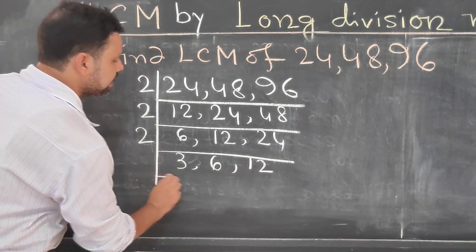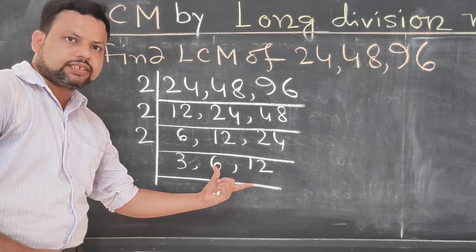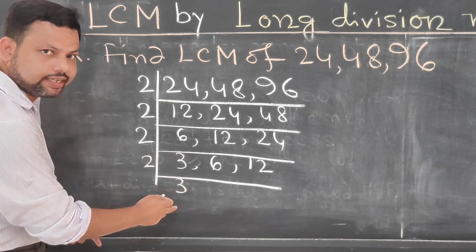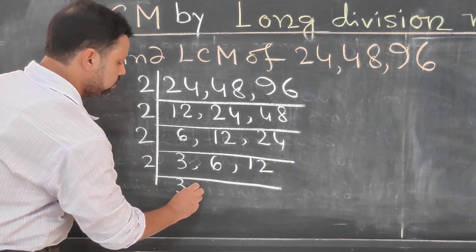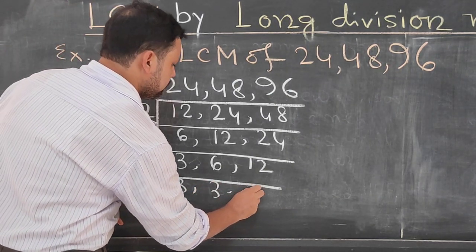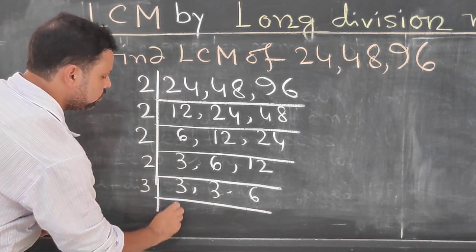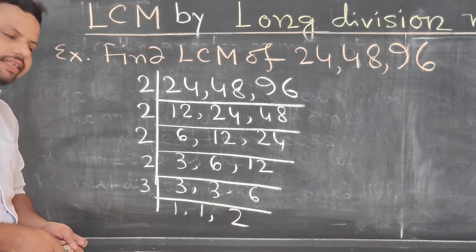Now again we have to divide by 2. Again, we have to divide by 2. Because this 3 is not divisible by 2, so again we have to divide by 3. Now again we have to divide by 3: 1, 1, 2. Complete this one.